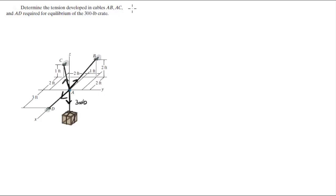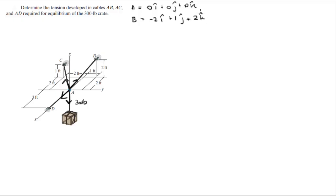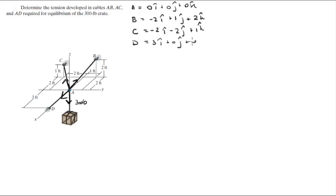First we need to find all the points involved. A sits at 0i + 0j + 0k, at the origin. B sits at -2i + 1j + 2k. C sits at -2i - 2j + 1k. And D sits at 3i + 0j + 0k.